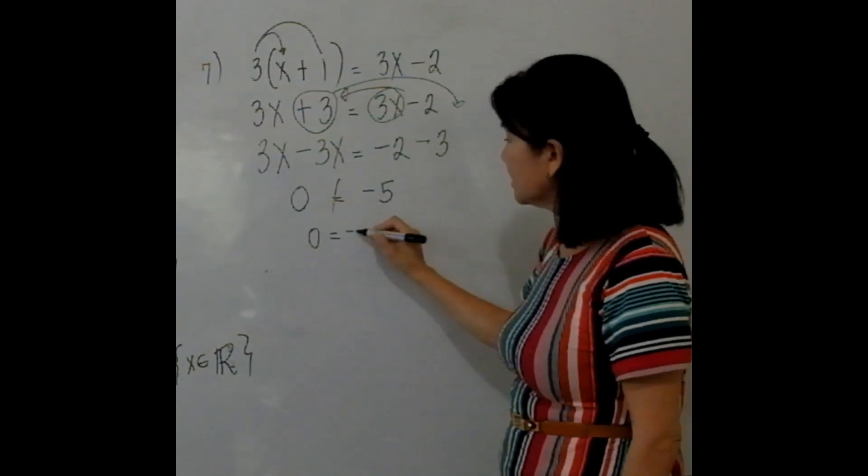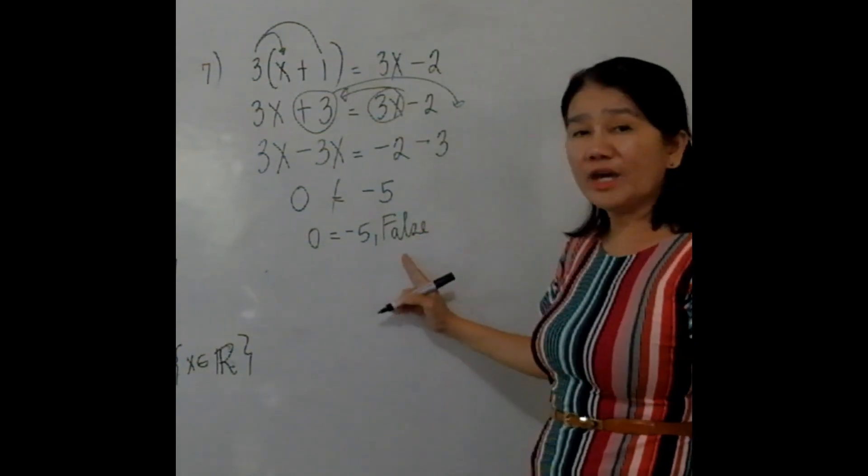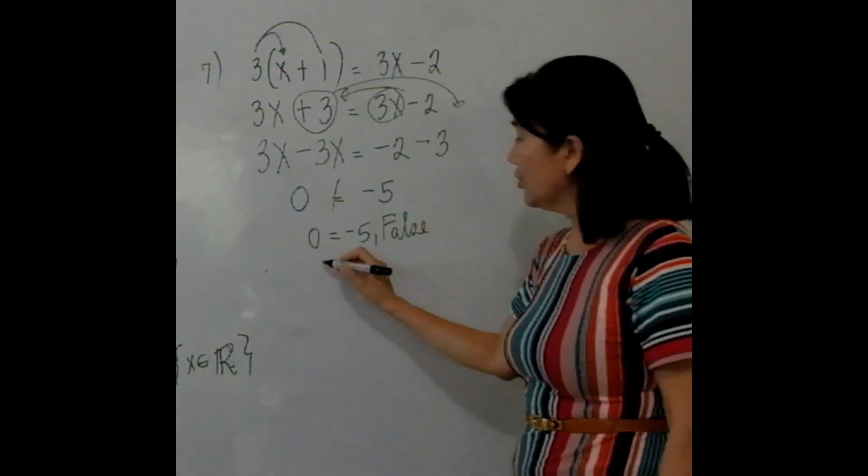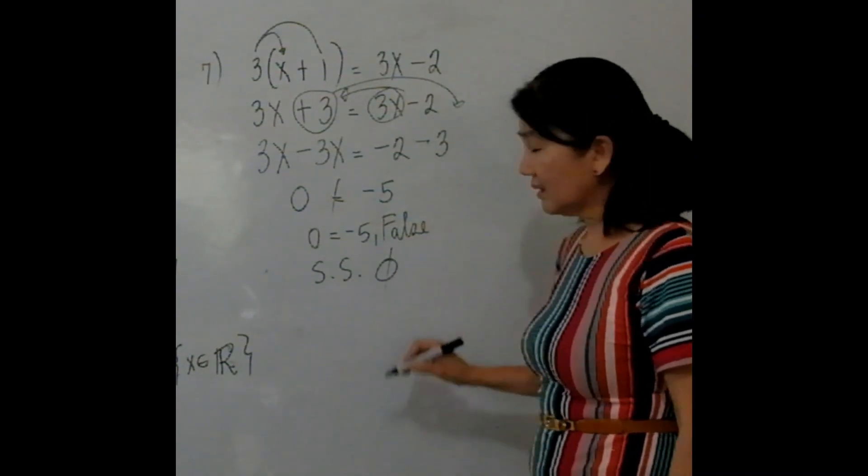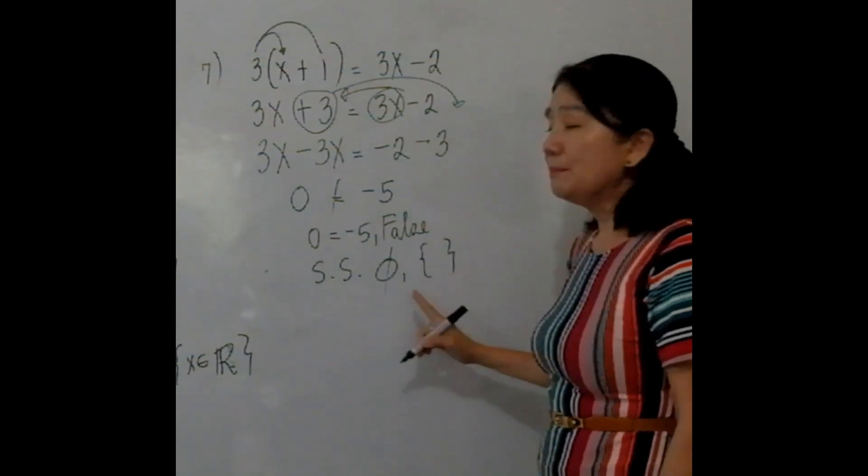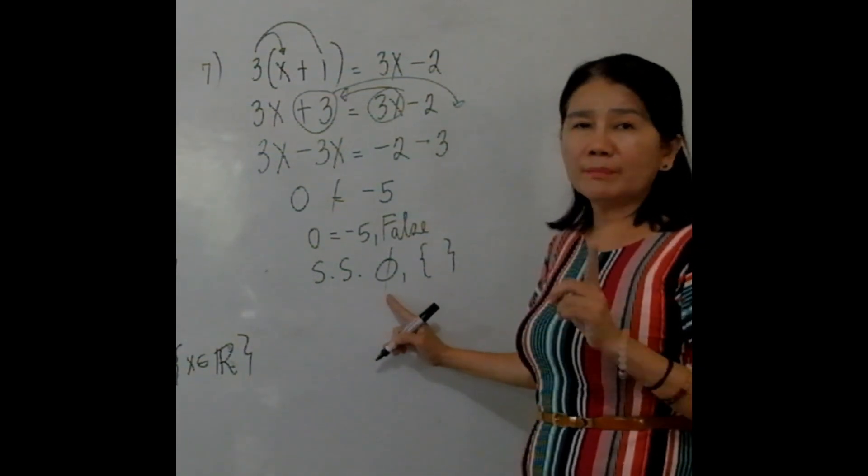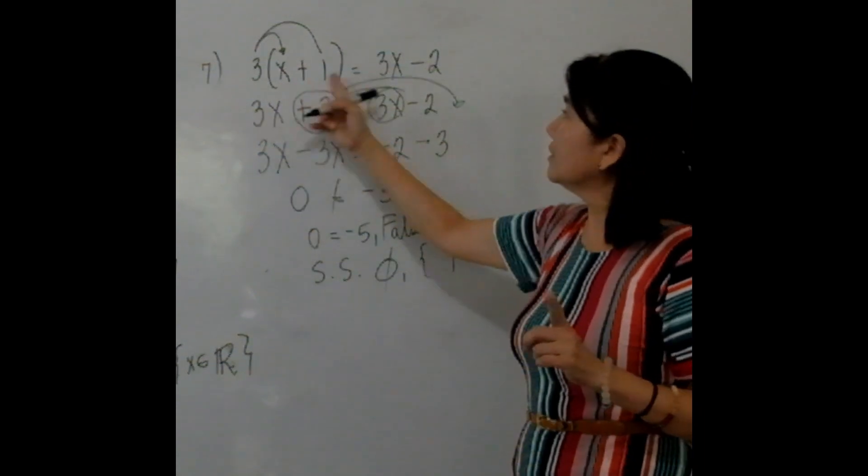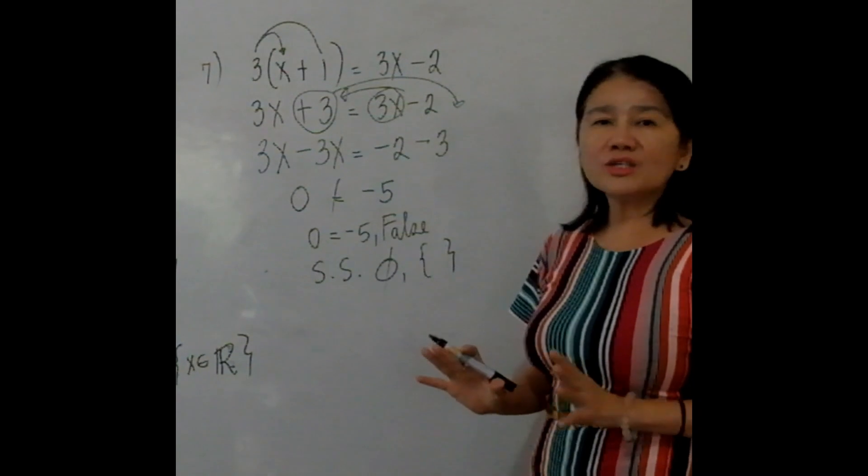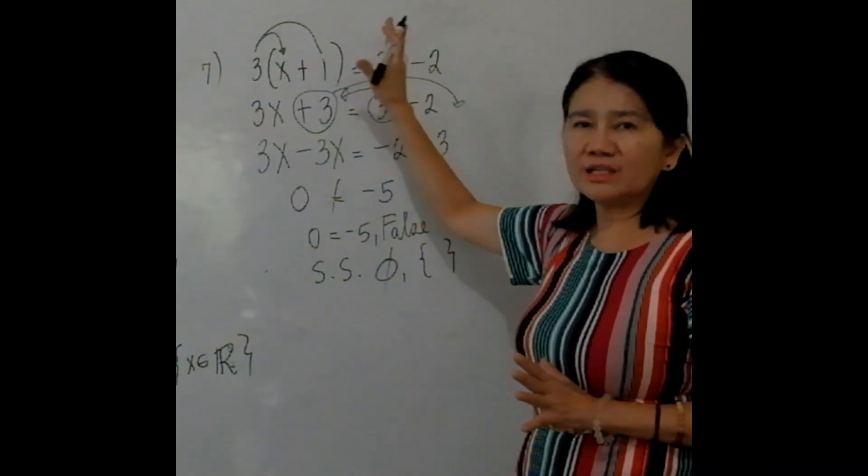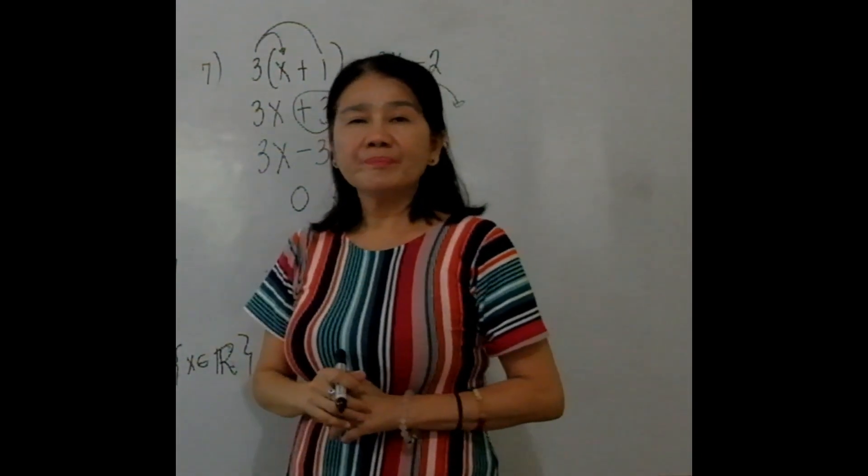0 equals -5 is a false statement. When you end up with a false statement, your solution set must be empty set or null set. Meaning no real number will satisfy the original equation. So no value of X will satisfy the given equation or make it true.